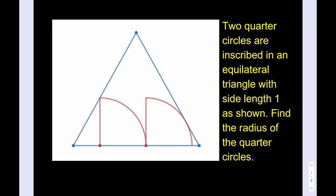So since we're looking for the radius of the quarter circles, I'm just going to call them R. So it's going to be an R, and that's going to be an R, and it's going to be an R as well.